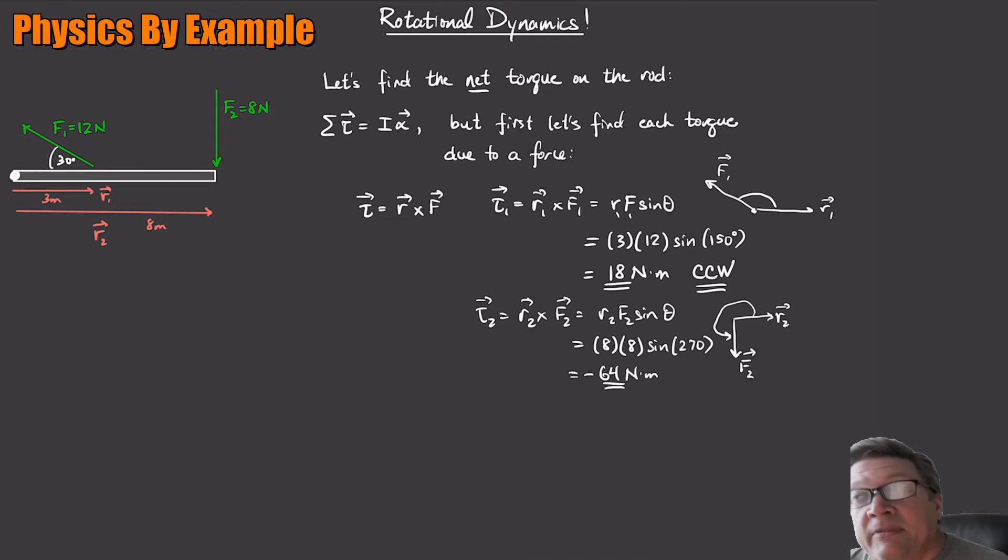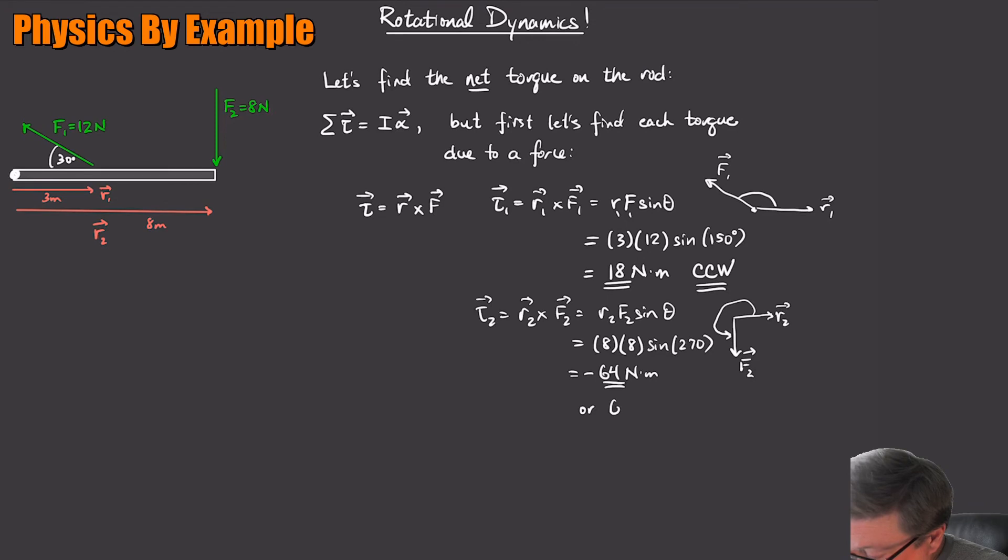So this is going to be a minus 64 newton meters. Or it's minus 64. Or you can just say 64 newton meters clockwise. Because F2, if left to its own devices, is going to want to make this thing spin clockwise. That's called, just by convention, that's a negative torque.